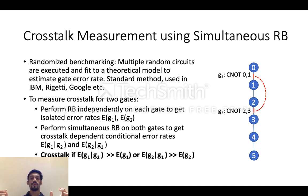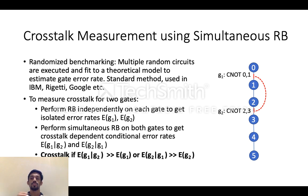Next, we perform simultaneous randomized benchmarking — we execute RB on both gates simultaneously. This allows us to measure the error rate for G1 in the presence of G2, giving us the conditional error rate EG1 given G2: what is the error rate of G1 when G2 is also executing in parallel? We say that there is crosstalk between these two gates G1 and G2 if their conditional error rates are actually much higher than the isolated error rates.